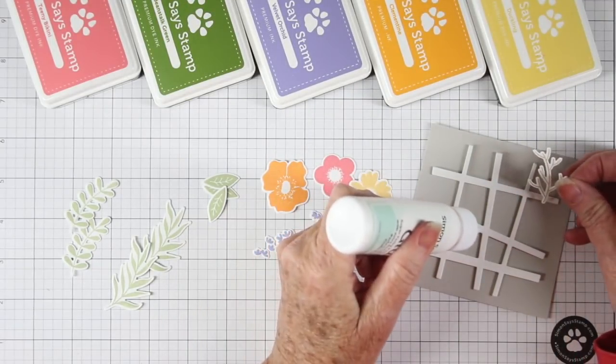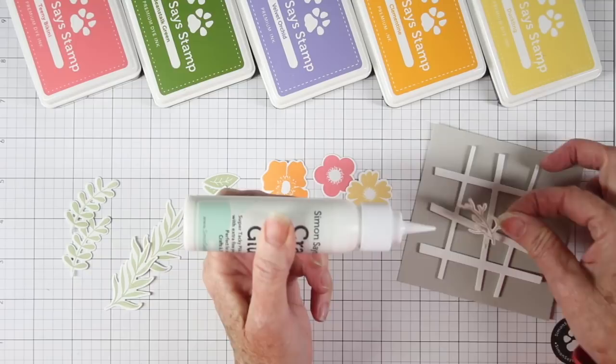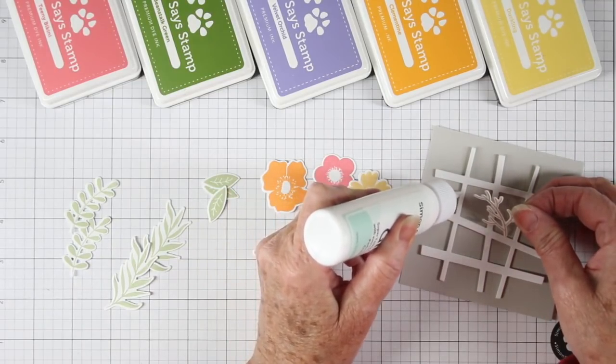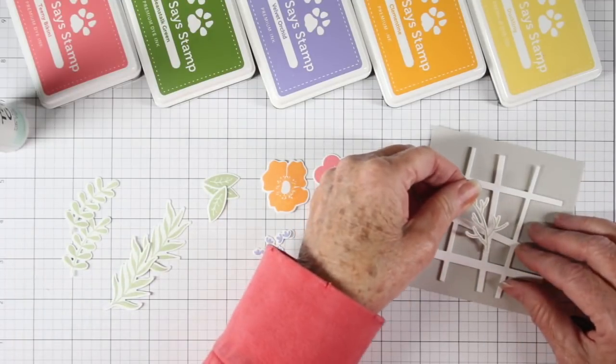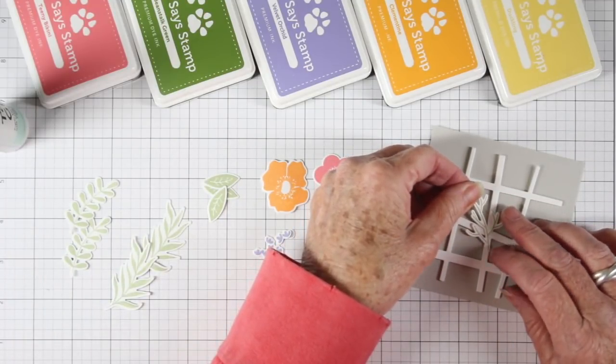To start my arrangement I am adding some greens to the trellis and I'm using the Simon Says Stamp tacky glue to glue these down. I will start with this small stem and I'll straddle it across the trellis.